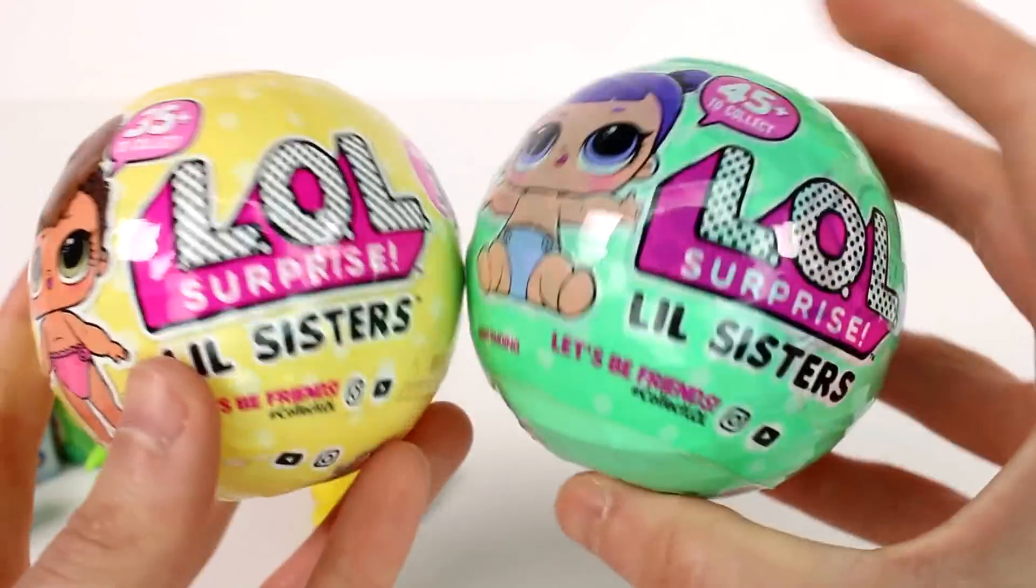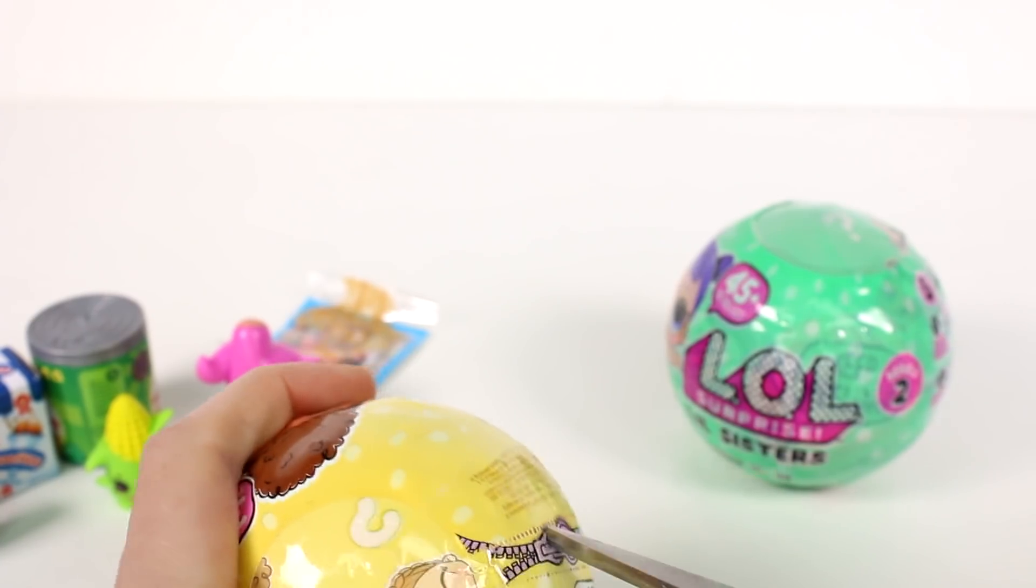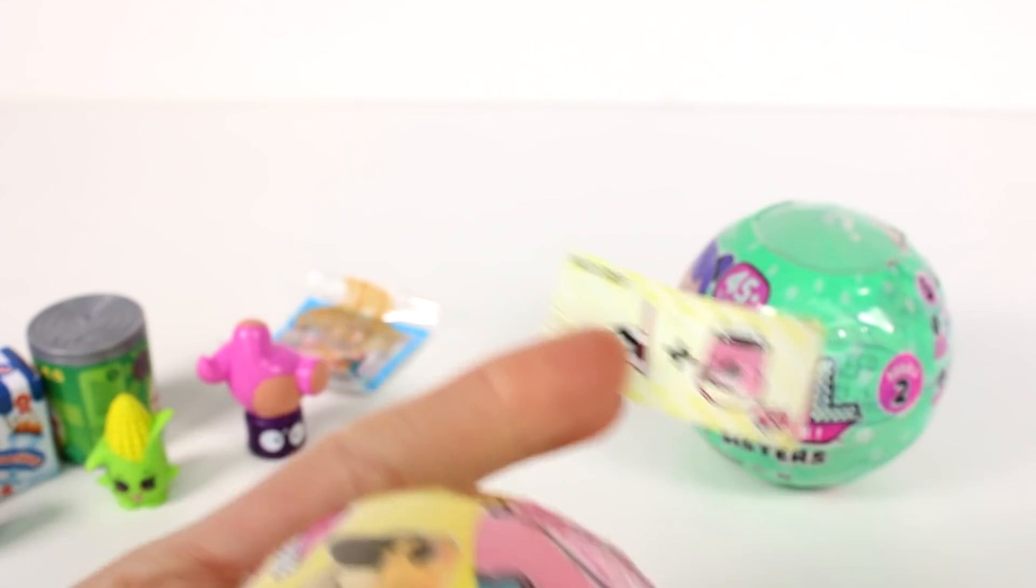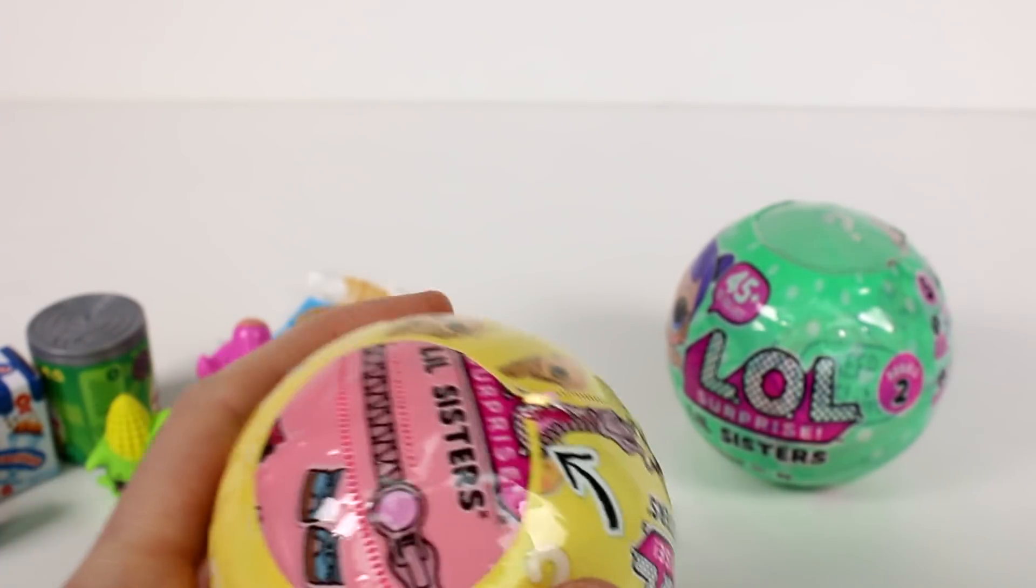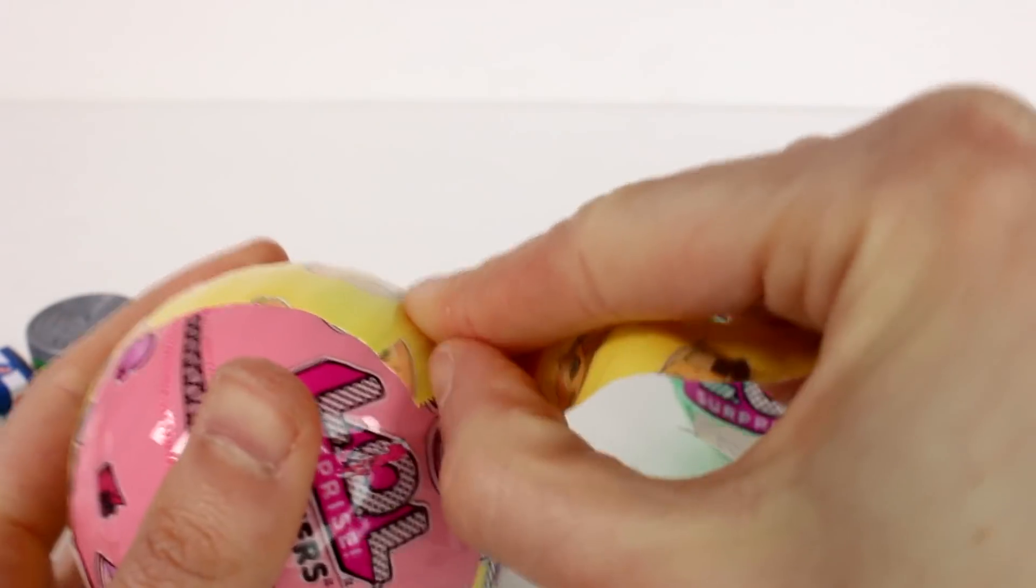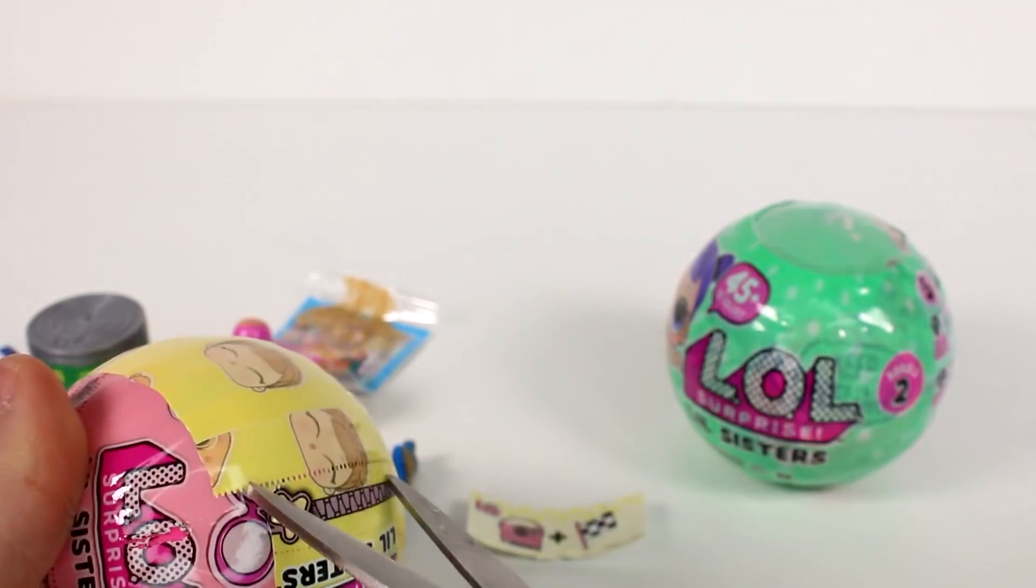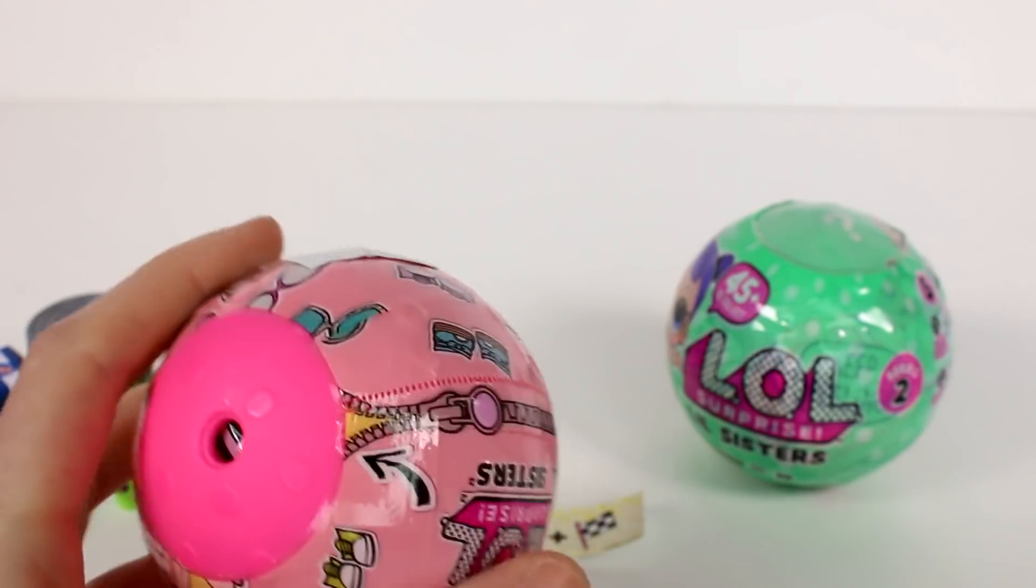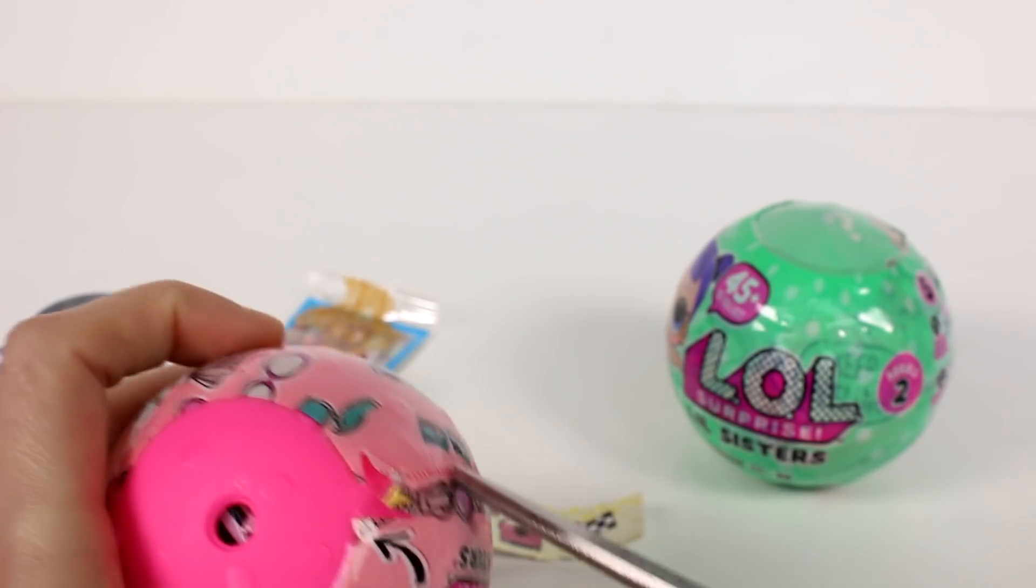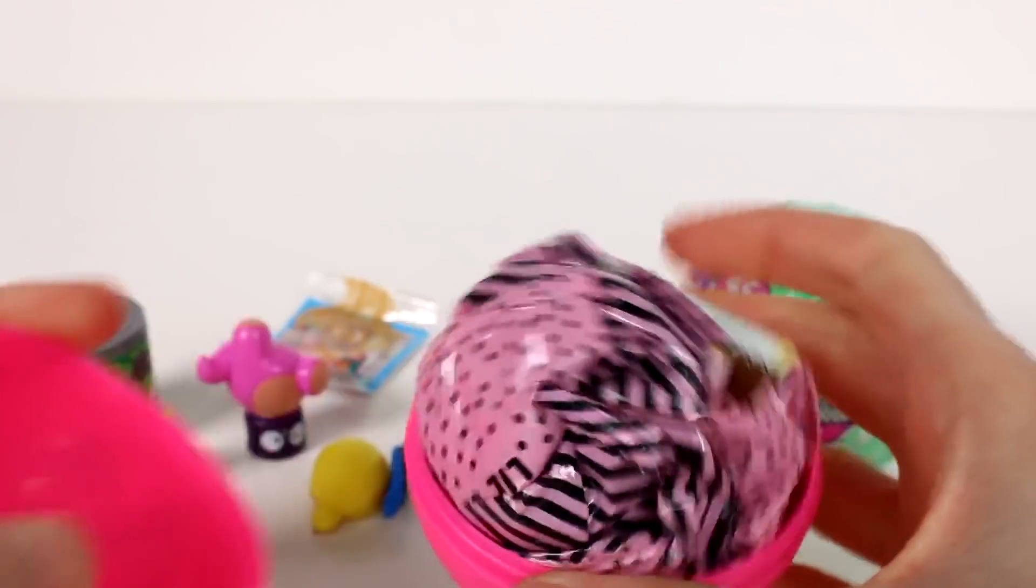Now we do have two LOL Surprise little sisters next. We have the series three and series two. So let's open up the series three first. Okay. We have our blue, which is photo finish. And then the next layer is not going to come open. Okay. Last, oh, there's our sticker right there. And the last layer. Finally be able to see what we got. This is for the ring for this.